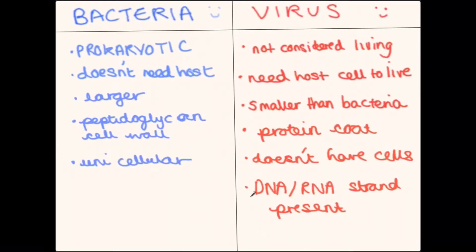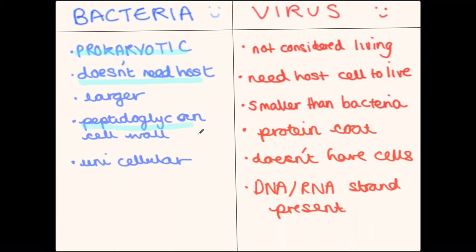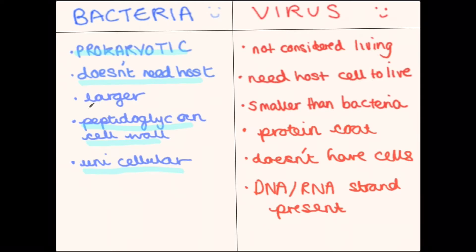Let's compare. The bacteria is a prokaryotic cell as mentioned. Therefore, it does not need a host. And because it's a prokaryotic cell, prokaryotic cells always will have a peptidoglycan cell wall, also known as murein. Bacteria cells are also mostly unicellular, and they can be seen under a microscope, so they are larger than the virus.